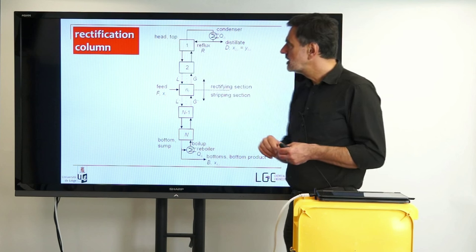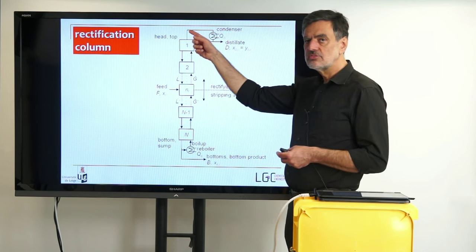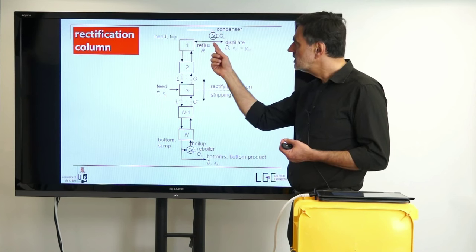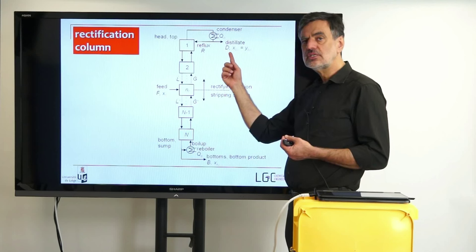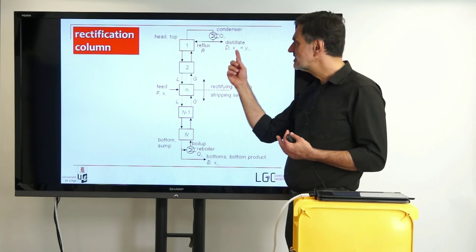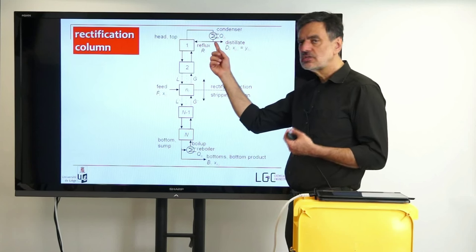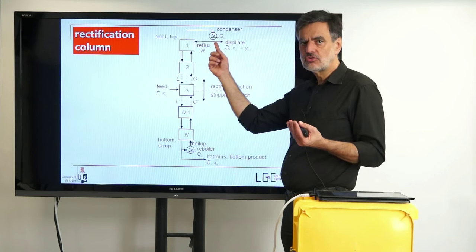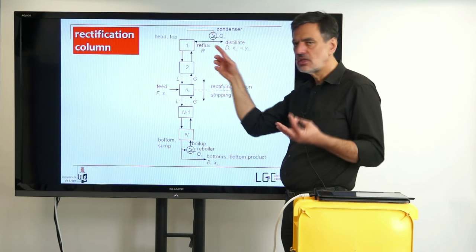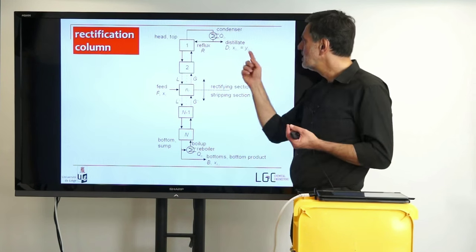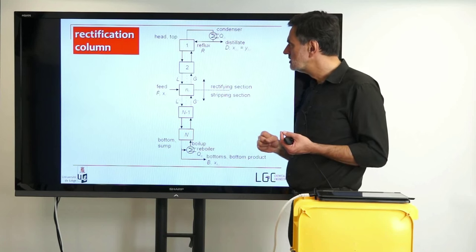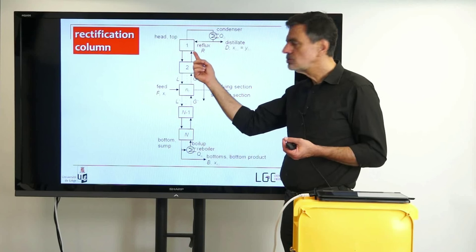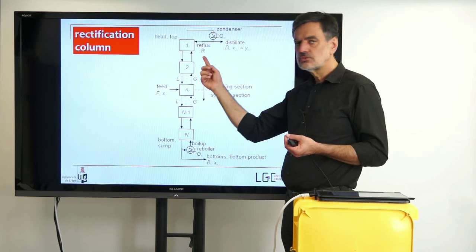At the top of the column, or the head of the column, we have the vapor that is leaving the first stage. That is being condensed in the condenser with the corresponding cooling power Q dot D. The liquid is then split into two fractions: on the one hand side our product D dot, with the corresponding composition XDI. We assume that we have complete condensation, so there is no vapor left, so the XD equals the YD that is entering the condenser.